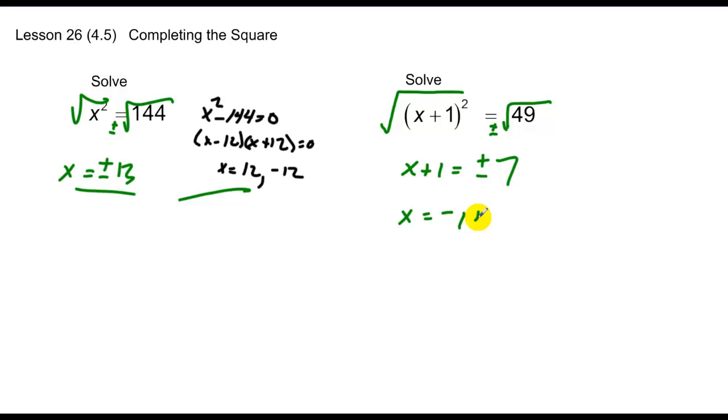Therefore, x equals negative 1 plus or minus 7. And in this, I have two solutions, negative 1 plus 7 and negative 1 minus 7, thus getting me 6 and negative 8, and that's the two solutions. I could have, if I wanted to, foiled this out, giving me x squared plus 2x plus 1 equals 49. Set aside equal to 0, factored and solved, but why when I don't have to?